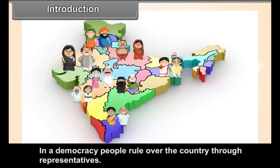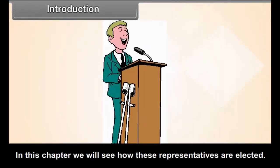In a democracy, people rule over the country through their representatives. In this chapter, we will see how these representatives are elected.